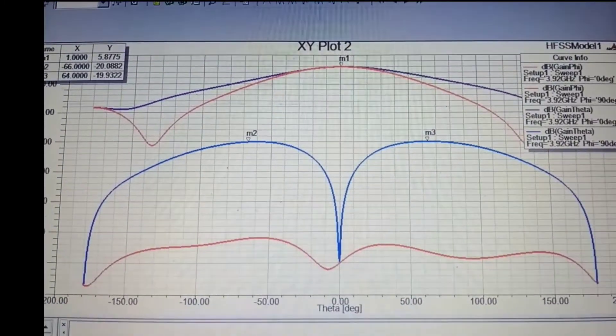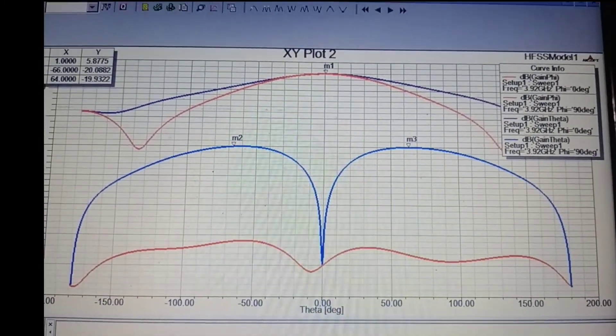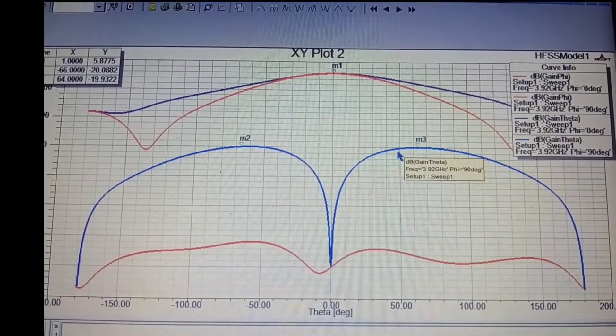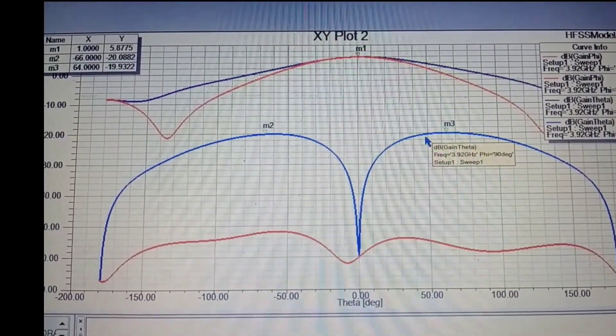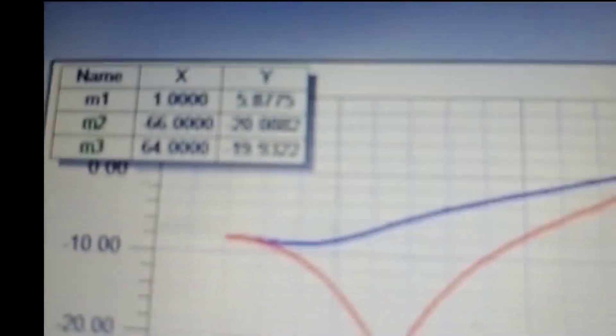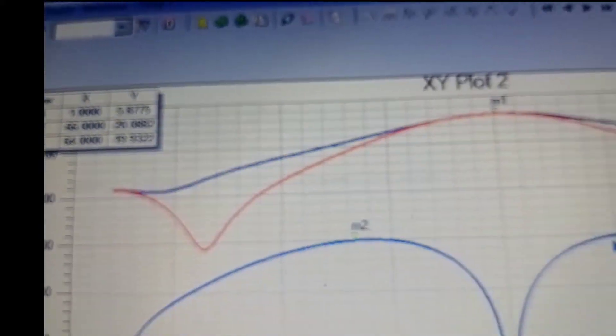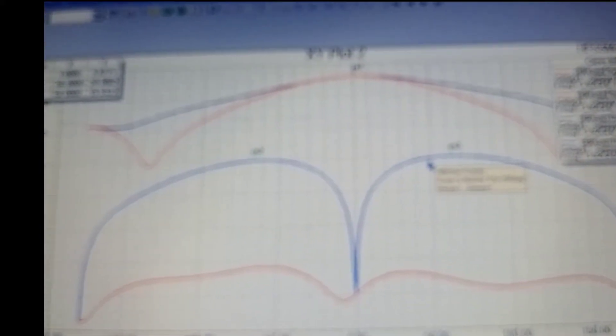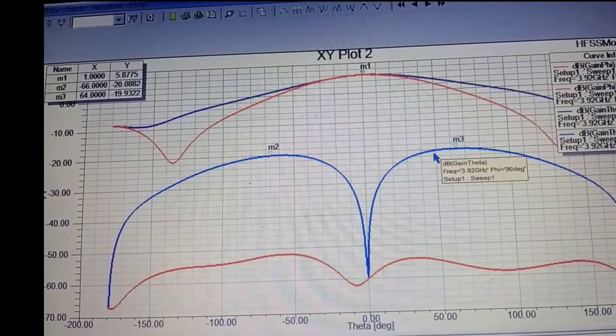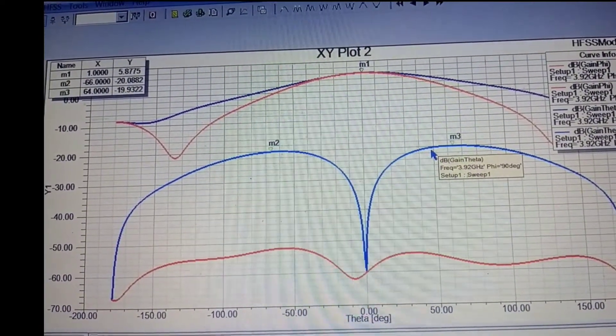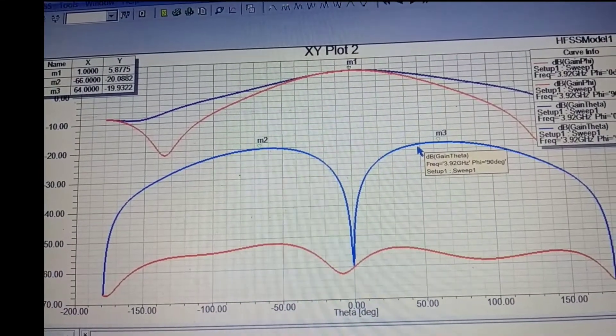As we discussed, the red indicates E plane and this color indicates H plane. We have a good amount of radiation gain, that is 5.87. Cross-pole is minus 28, it is good. This is the way you can design and simulate cylindrical dielectric resonator antenna that is excited with HEM11 delta mode.